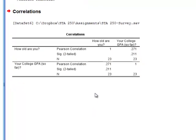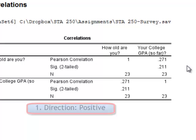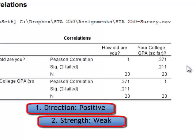SPSS will give me the correlations table showing how age and college GPA are correlated with each other. The correlation coefficient is 0.271. This is a positive correlation coefficient, which means that as age increases, college GPA increases as well. But regarding the strength of the relationship, this is a relatively weak correlation because it's smaller than 0.3, which is an arbitrary boundary between weak and somewhat strong relationships. So 0.271 is a weak correlation.